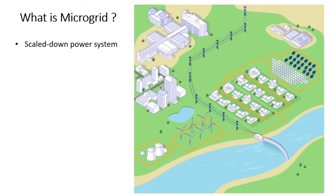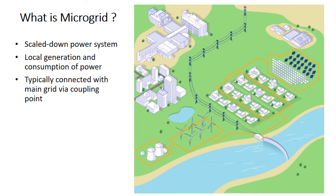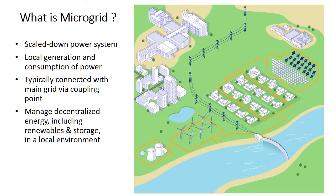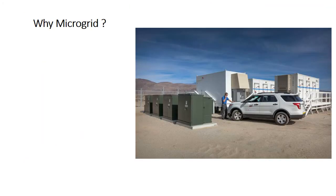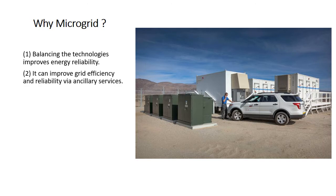What is a microgrid? It is a scaled-down power system with local generation and consumption of power, which reduces transmission losses. It is typically connected with the main grid via a coupling point, manages decentralized energy, includes renewables and storage in a local environment, and allows for optimizing controllable loads and building automation. Why we need microgrid: it improves energy reliability and can improve grid efficiency and reliability via ancillary services.